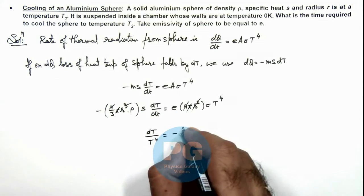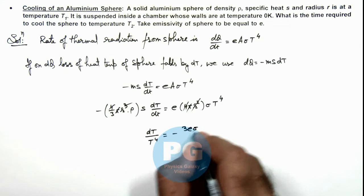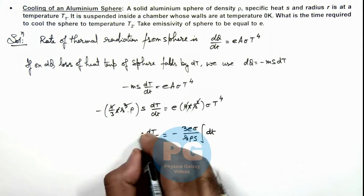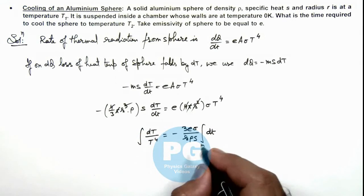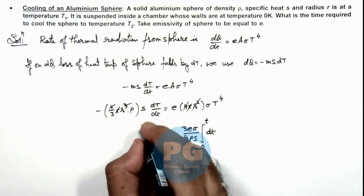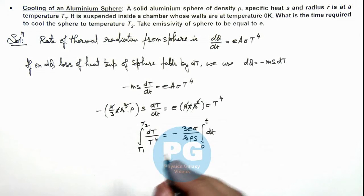And if we integrate these terms, at t equal to zero the temperature was T1, and at a time t its temperature falls to T2. Then this gives us integration 1/T to power 4 is minus 1/(3T³).